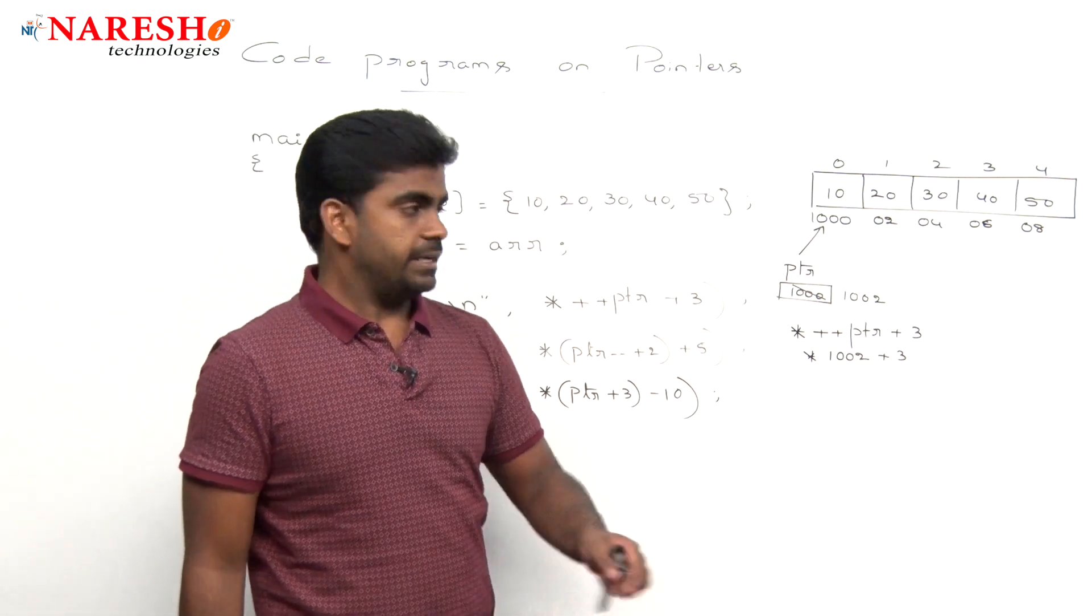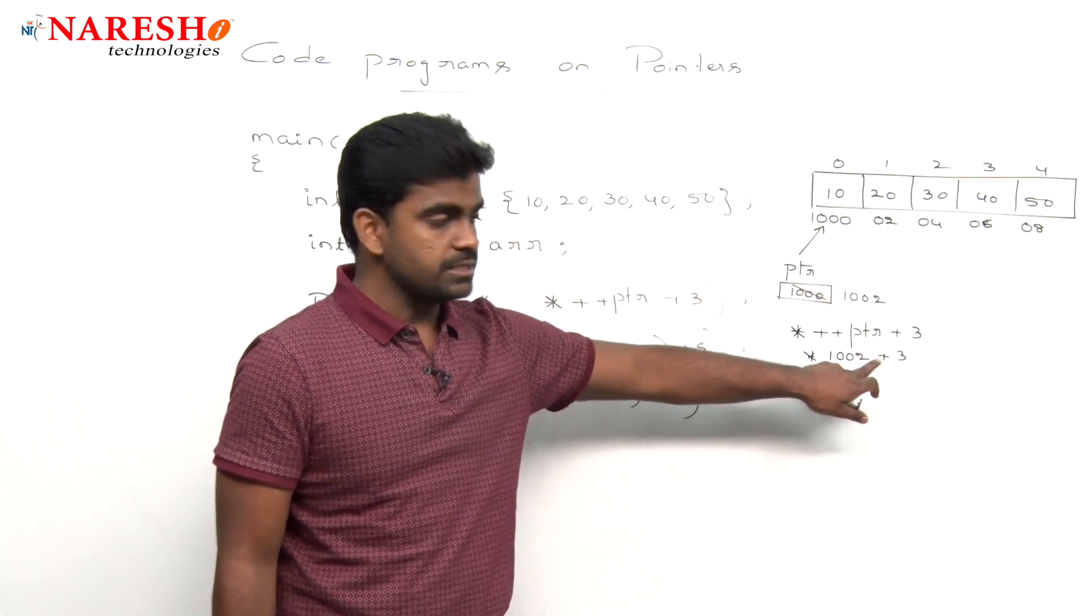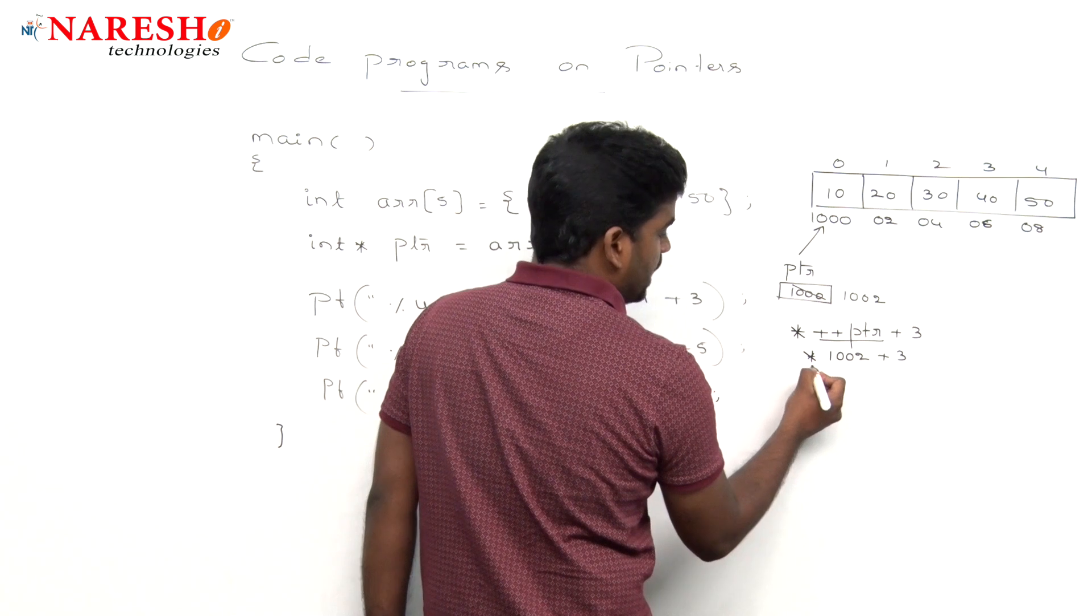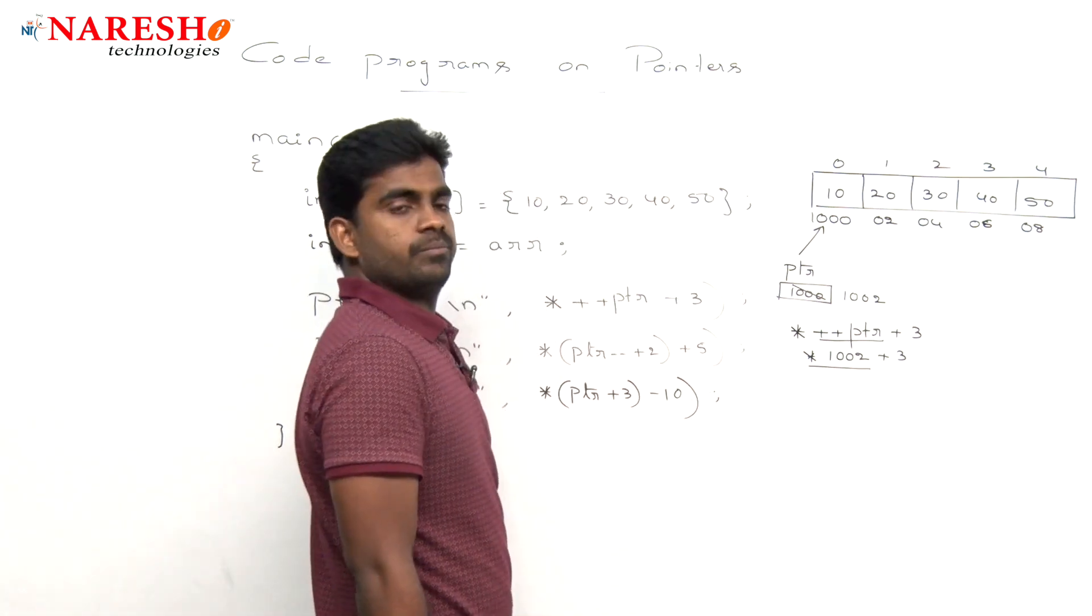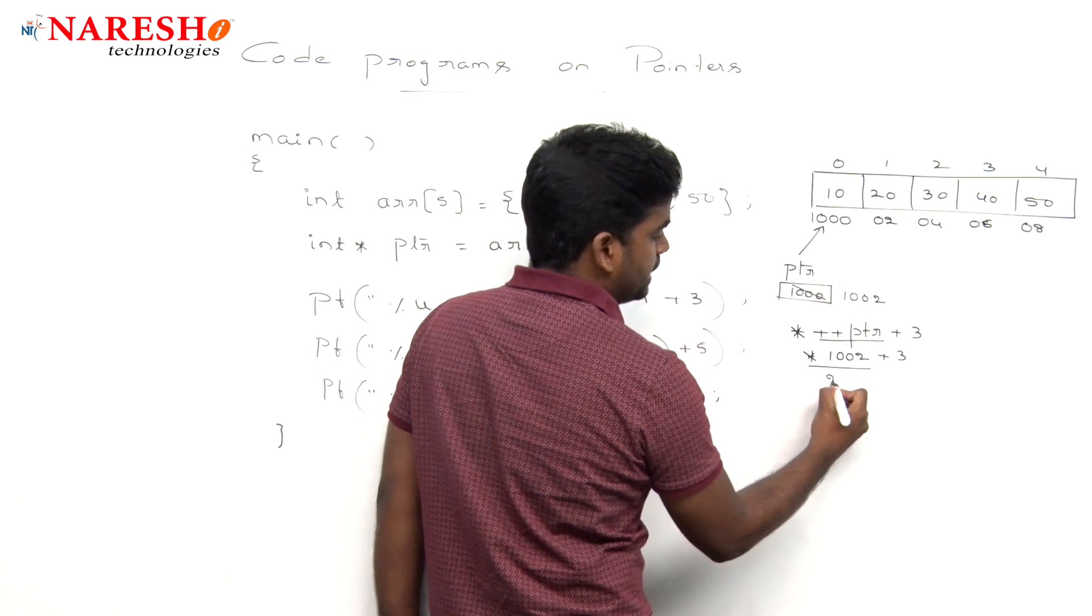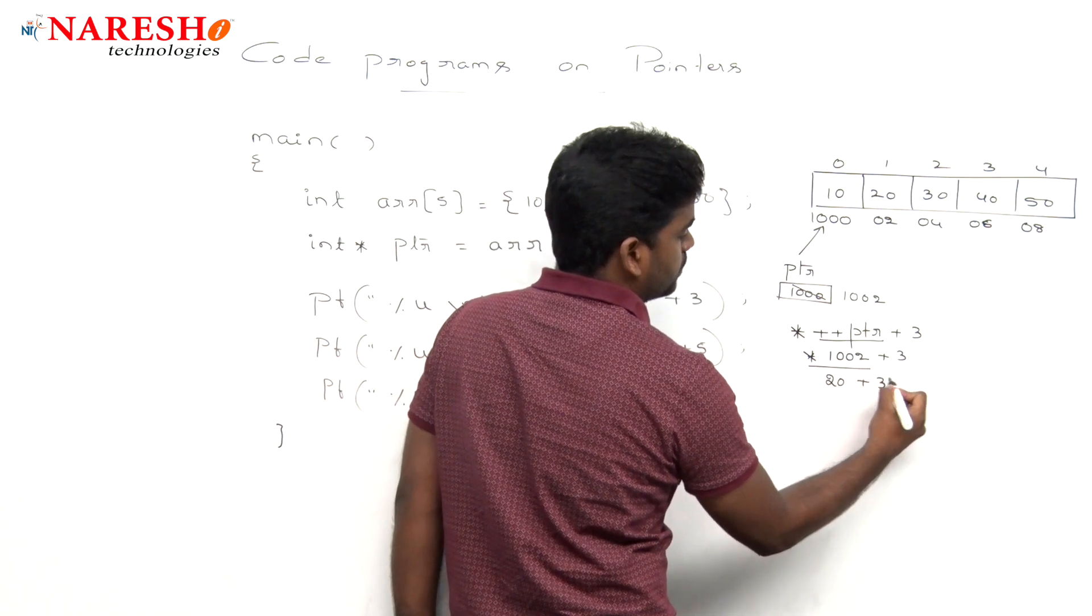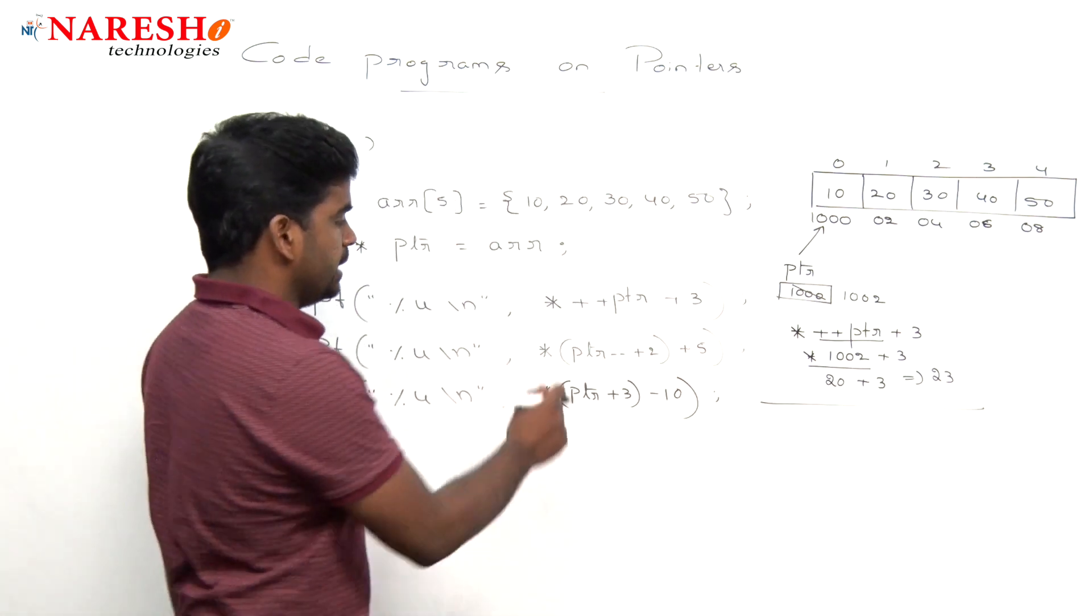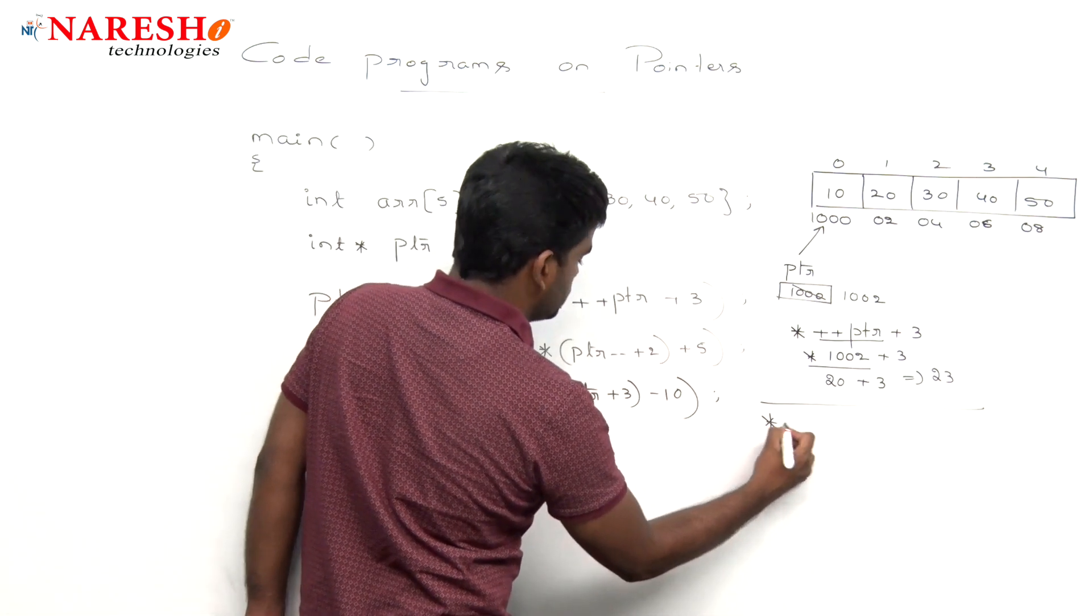Now we need to evaluate these three expressions. The first one, here it is pointer ++PTR plus 3. First which one executes? First it gives the priority to modify operators. Here it is ++PTR means the value increases and it will become 1002. We know that pointer modify concept in the last video we discussed that. It is an integer type, so it will be increased by 2 bytes. So 1000 becomes 1002.